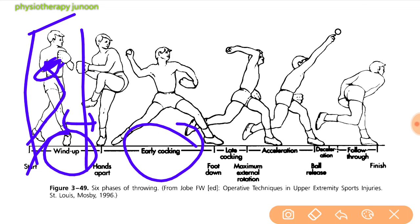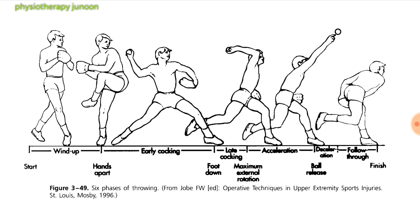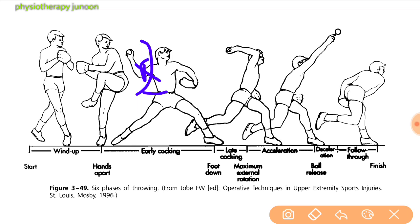In the early cocking phase, as the ball is released from the glove hand, the shoulder abducts and externally rotates, moving the arm away from the body. The body starts moving forward, generating momentum. Early cocking terminates as the forward foot contacts the ground.